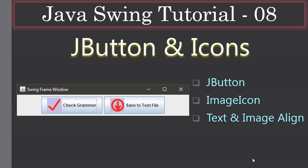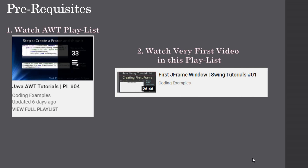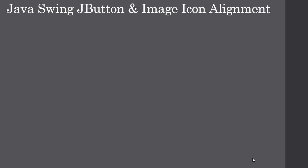In horizontal alignment you can place the image before or after the text. In vertical alignment you can place the button text above or below the image. Some AWT knowledge is a good prerequisite — once you have AWT knowledge you can learn Swing easily. On top of a JFrame window we will create a JButton and study its behavior with icons.